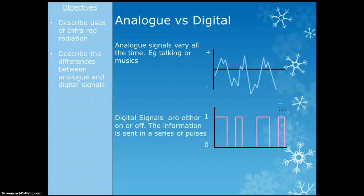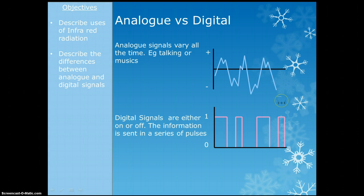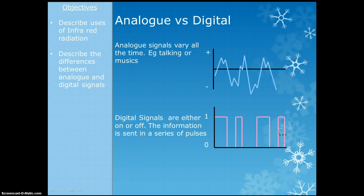Analogue signals vary all the time. If you have a look at this one, it goes up, down, up, down, all over the place — there's no clear pattern, it could be any value. An example is talking: my voice coming over this is an analogue signal. The digital signal is just on or off, with periods of on and periods of off, and that is all the information that we need.